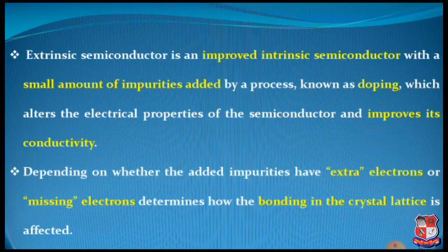Extrinsic semiconductor is an improved intrinsic semiconductor because a small amount of impurities are added by a process. If you are adding some impurities then there must exist a process which is universally utilized, and this process is known as doping. Doping is the process with which we can add some impurities inside any kind of material to improve its electrical conductivity.